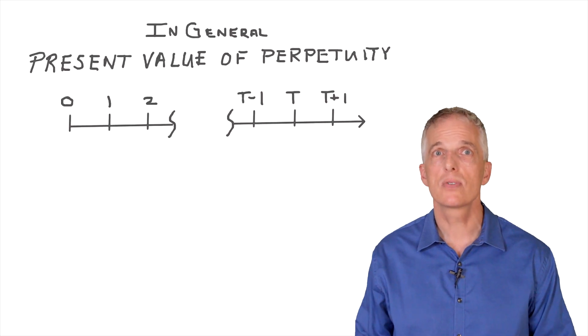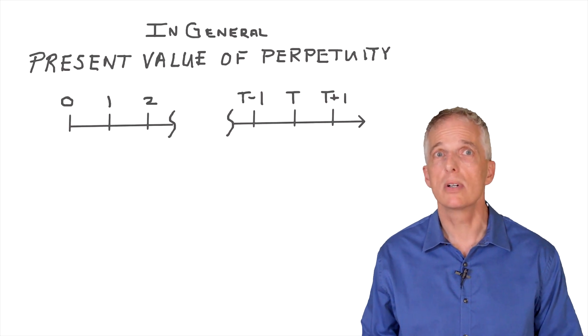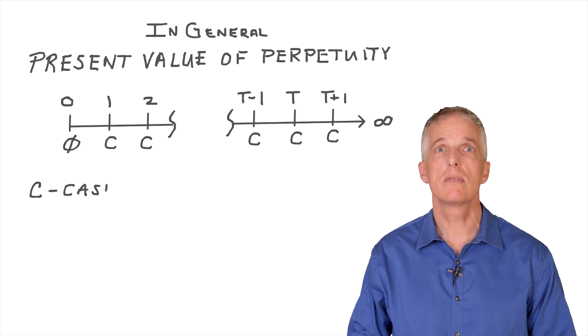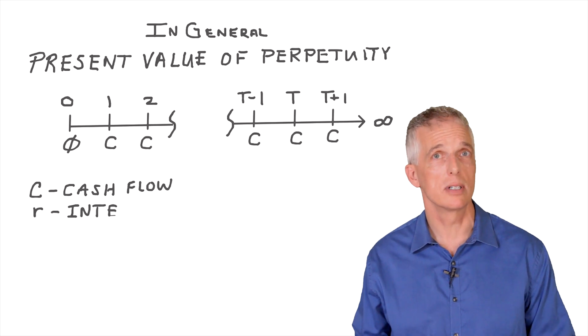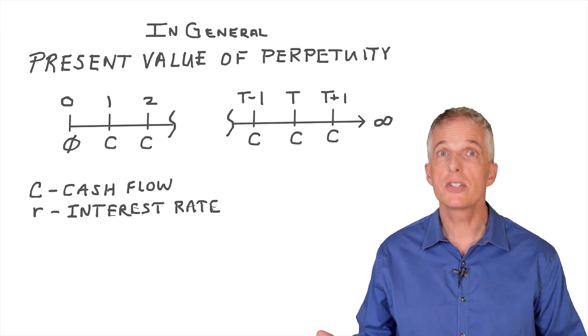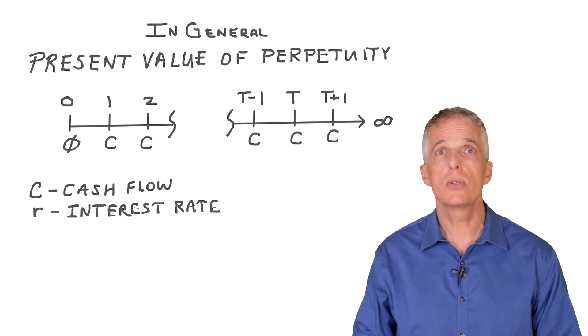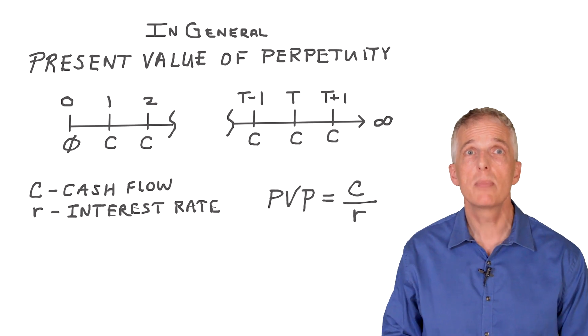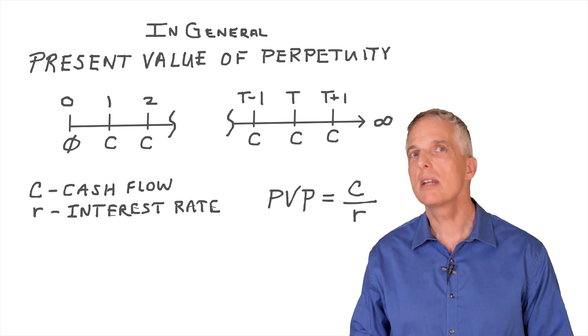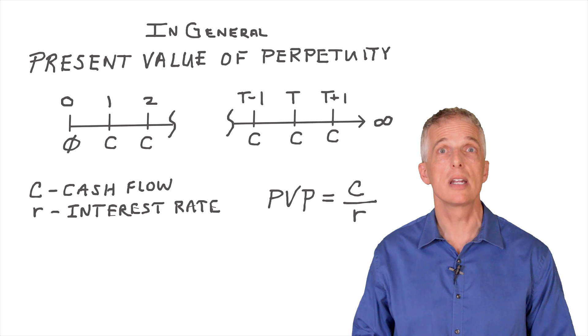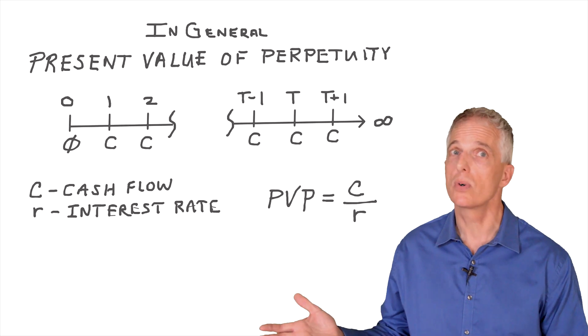Now what about the more general case, where we have a perpetuity that pays a constant cash flow C forever, when you have an opportunity to invest at an interest rate R forever? In general, the present value of the perpetuity will be simply C, the periodic cash flow, divided by R, the prevailing interest rate, as is shown on the board.